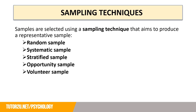So how do we select our samples? Samples are selected using a sampling technique that aims to produce a representative sample. The five sampling techniques you need to know about on the AQA specification are: random sampling, systematic sampling, stratified sampling, opportunity sampling, and volunteer sampling.